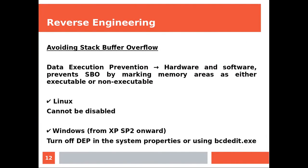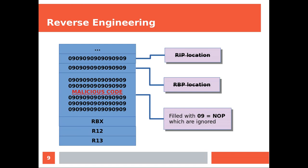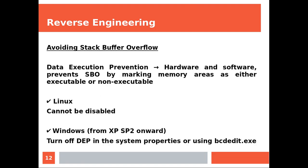One more level of security — generally all of these technologies are installed and turned on by default on all systems. Data Execution Prevention (DEP) is a hardware and software security feature which prevents stack buffer overflow by marking memory areas as either executable or not executable. If an area is marked as not executable, the malicious code will never run. They might still be able to damage the RIP and RBP, but they won't be able to gain control. If you wish to turn this feature off on Windows, you may need to modify the system properties or use a specific command line.